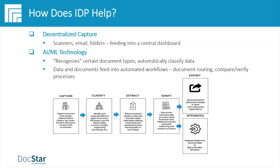How does IDP help? Dean and Eric approach this from an input, process, and output framework. On input: the concept of decentralized capture — years ago it was about bringing the paper to a centralized scanning room, but with today's technology, especially scanners and office equipment, you've brought the process to the paper so people can capture it where it actually exists. Scanners are absolutely an important part of today's capture technology for the paper aspect.